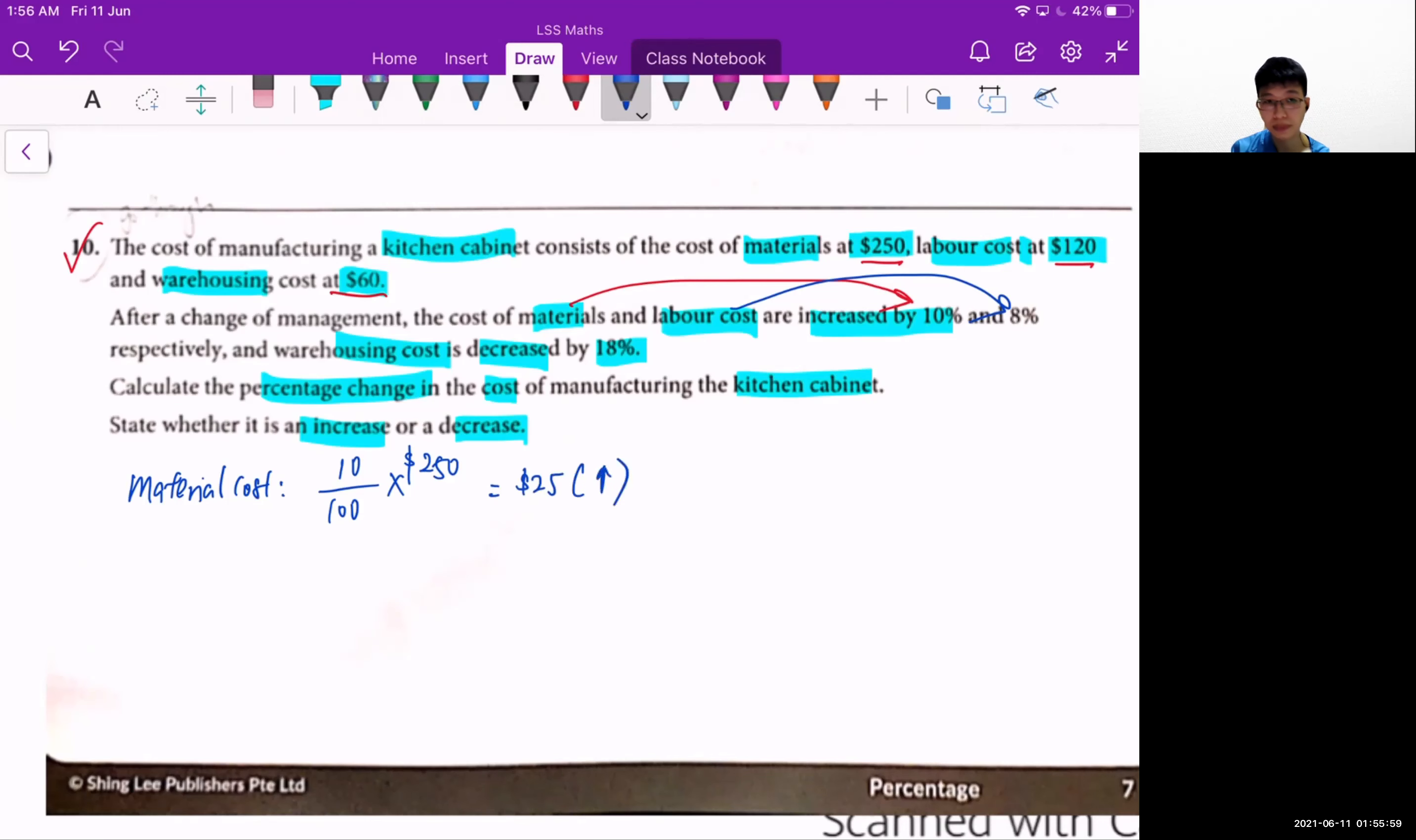For the labor costs, it increased by 8%, which is $9.60. And warehouse decreased by 18% of $60, which is $10.80.